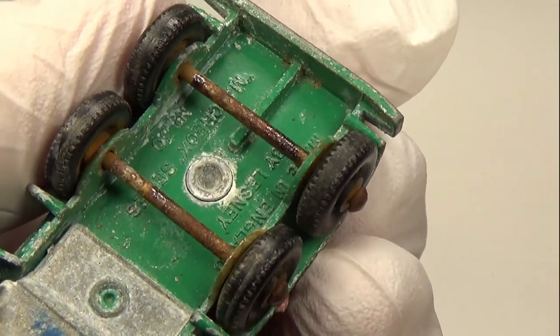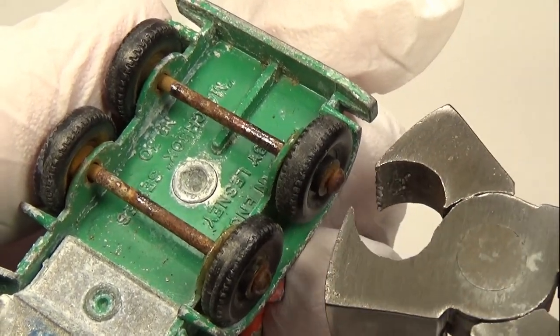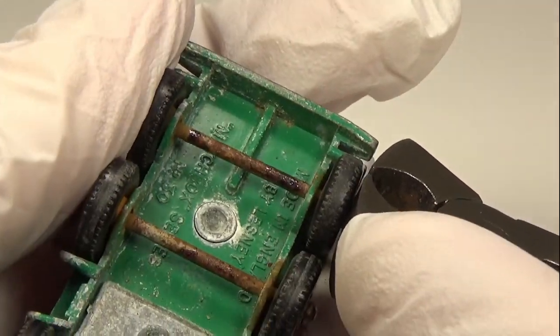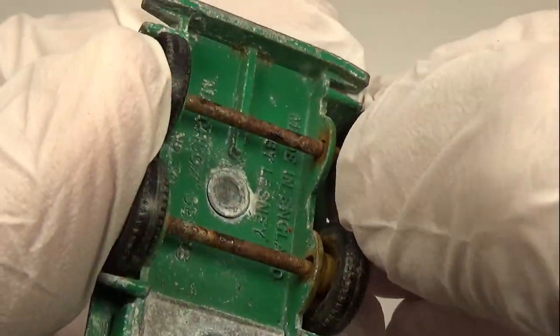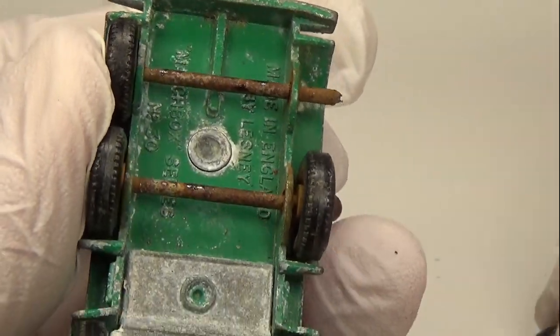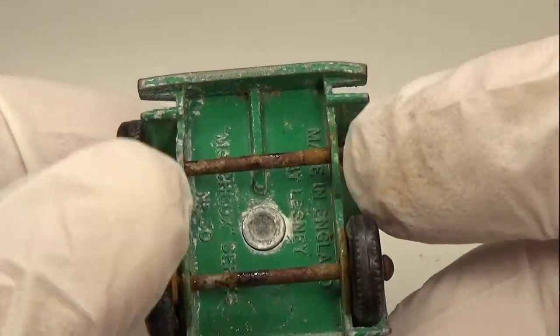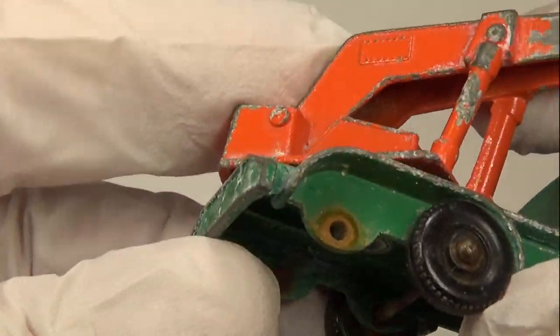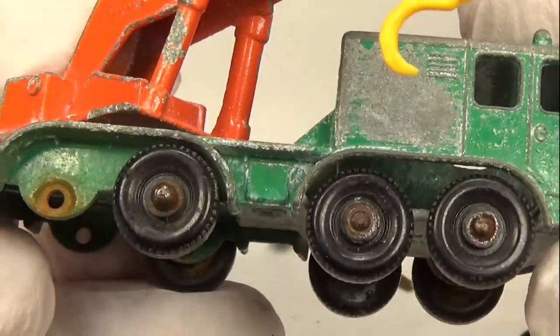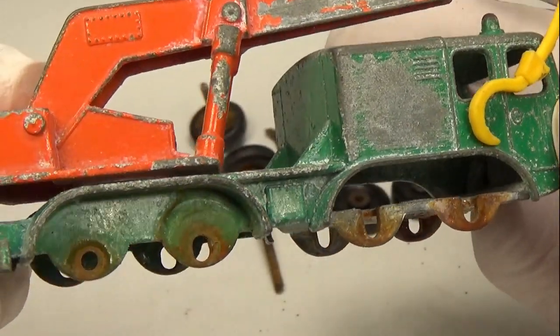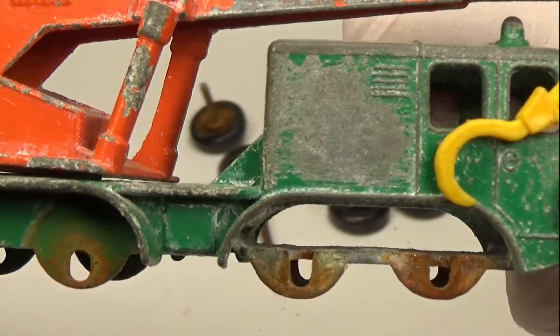I'll start by using some end cutters to clip off the mushroom portion of the axles that retains the wheels. The axles are made of mild steel and are relatively easy to cut. The issue I had with this model was the fact that the wheels were stuck on due to the axles rusting. Rust is not as dense as steel, so any object that rusts gets a little bit bigger. In this case the axles enlarged, filling any gap between the axle and the wheel. With some time and patience I was able to remove the wheels and axles without destroying them.